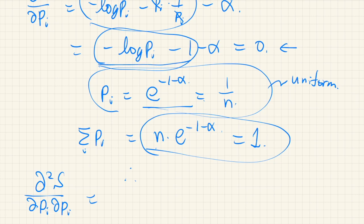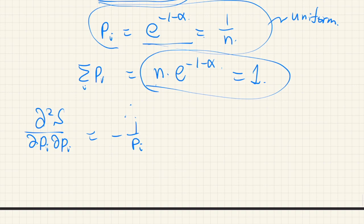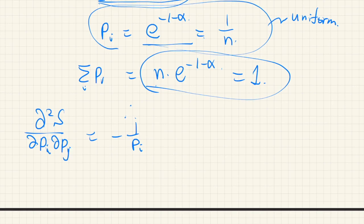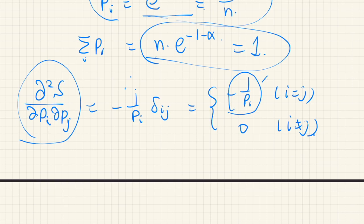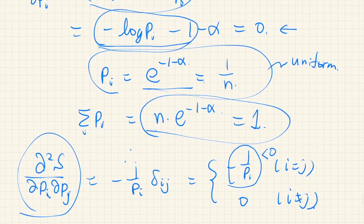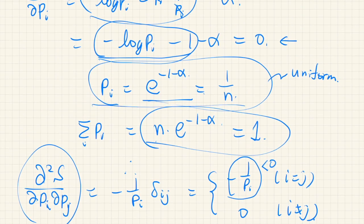The Hessian has entries negative 1 over pi when i equals j (expressed using Kronecker's delta), and zero otherwise. This means the Hessian is a diagonal matrix with all diagonal elements negative — making this matrix negative definite. For a negative definite Hessian, the stationary point must be a maximum, so entropy is a concave function. Therefore, we are now sure that the uniform distribution gives the maximum entropy.